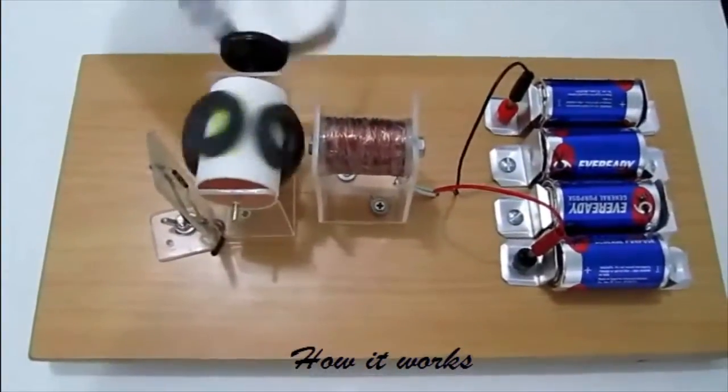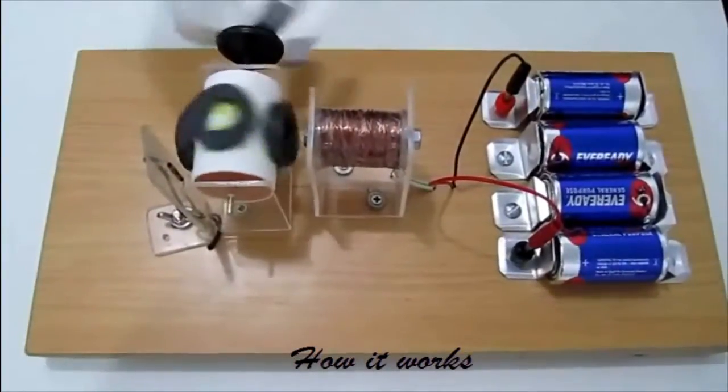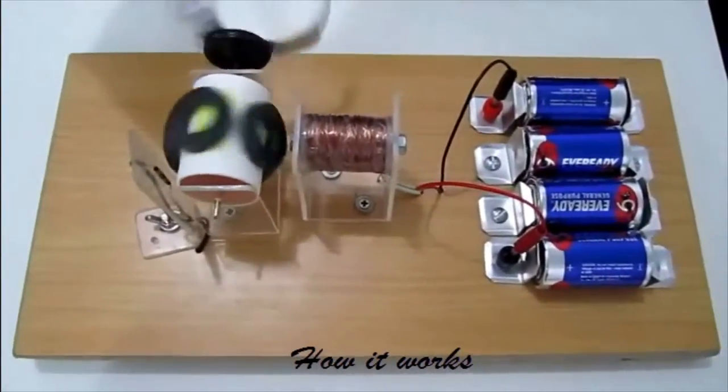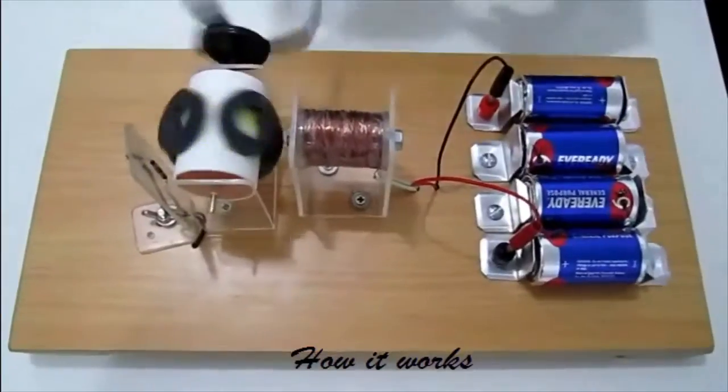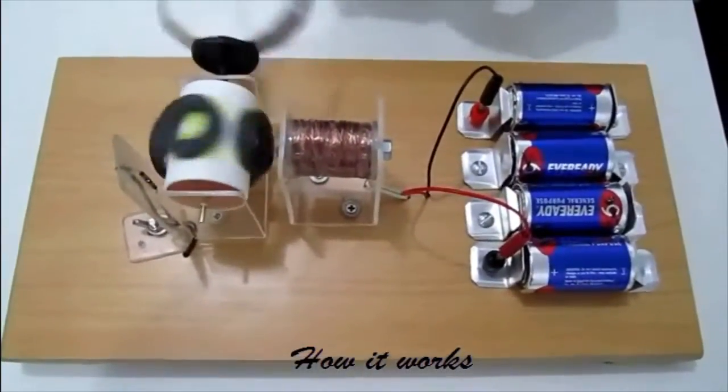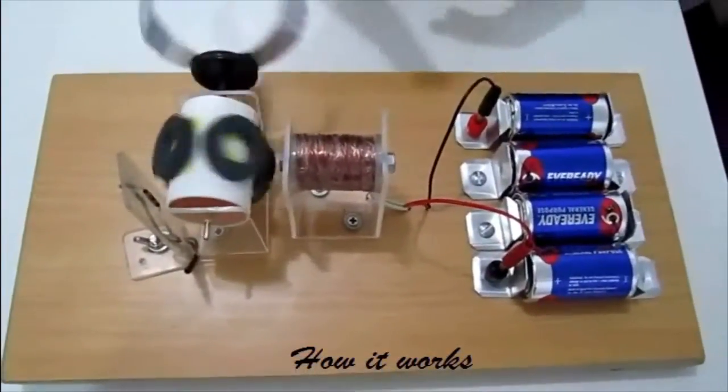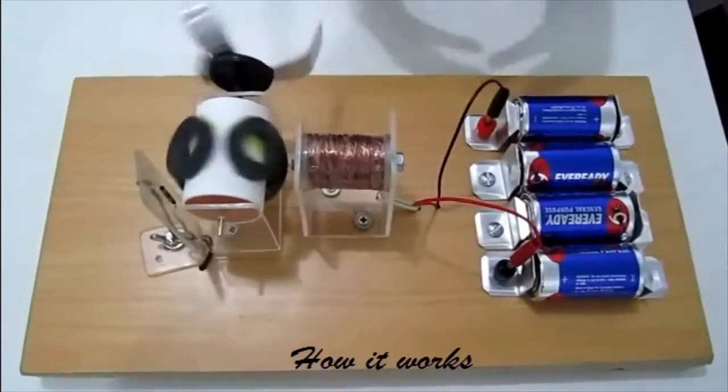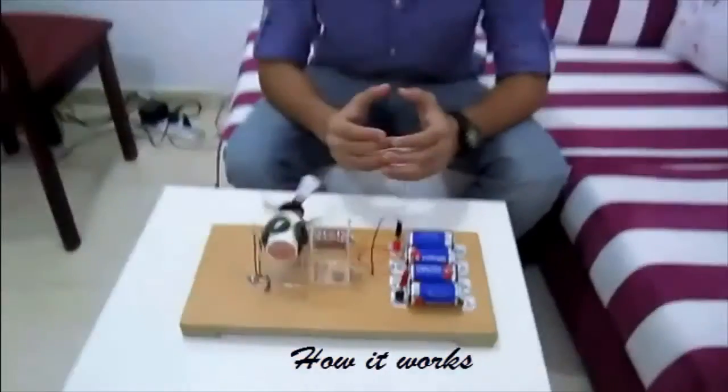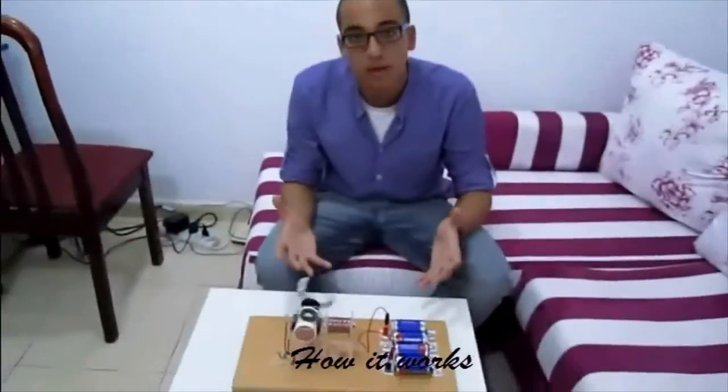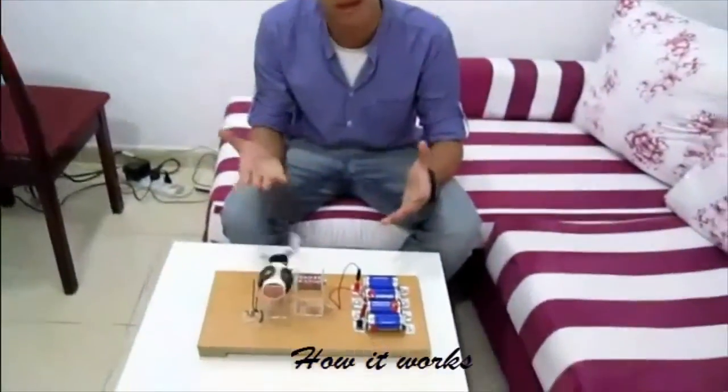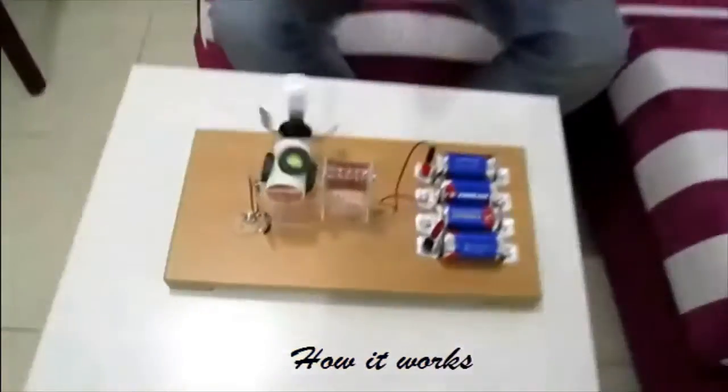Another step is that when the permanent magnet goes past the reed switch, when it goes away from the reed switch, the reed switch opens, so the circuit is open. There is no current flowing through the copper wires or through the electromagnet when the reed switch opens.